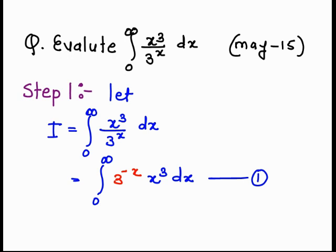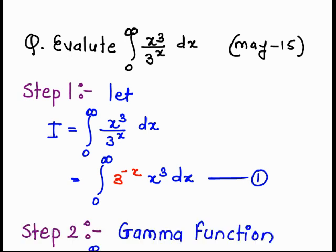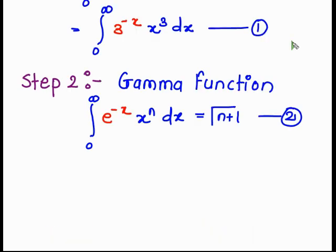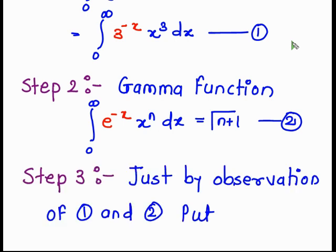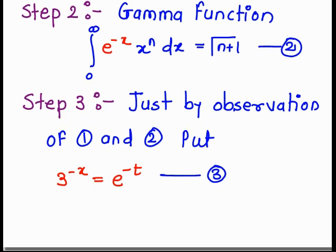So we rewrite it as the integral from 0 to infinity of 3 raised to minus x times x raised to 3 dx. In place of 3 raised to minus x, we require e raised to minus x to match the gamma function definition. So we need to substitute: put 3 raised to minus x equal to e raised to minus t.